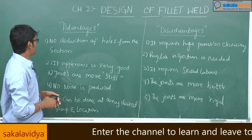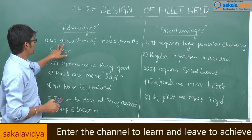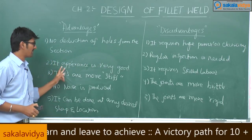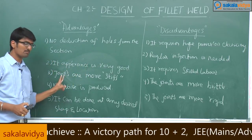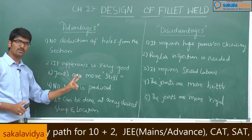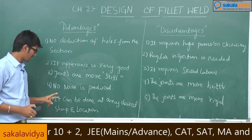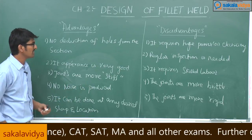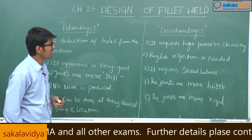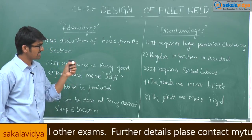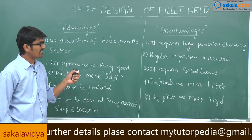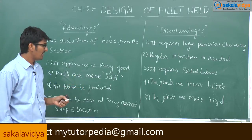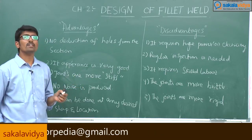So to summarize: the advantages of weld connections are — no deduction of holes from the section, appearance is very good, joints are more stiff, no noise is produced, and it can be done at any desired shape and location. The disadvantages are — it requires huge power and electricity, regular inspection is needed, it requires skilled labor, and the joints are more brittle and more rigid.